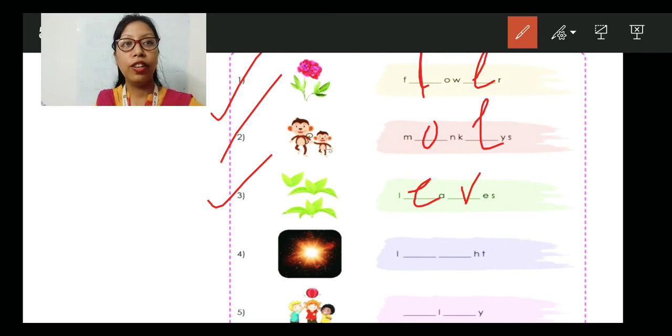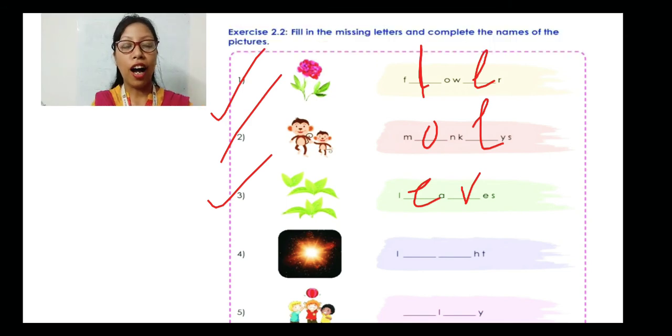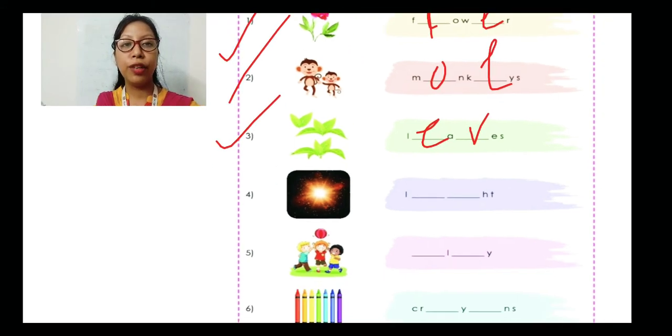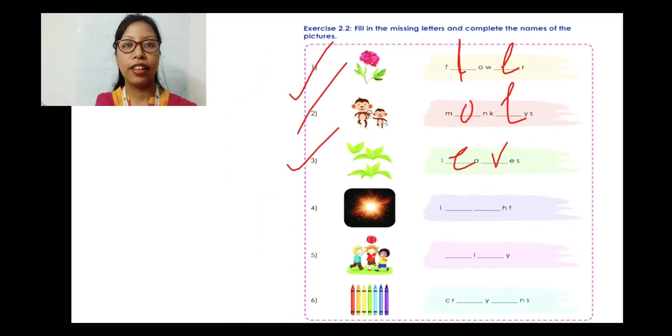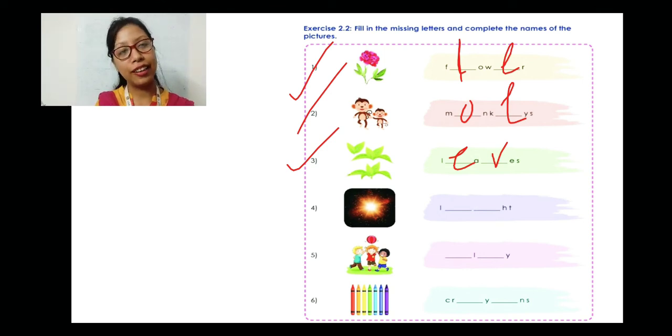The other three — four, five, and six — are yours. You will be doing those on your own.